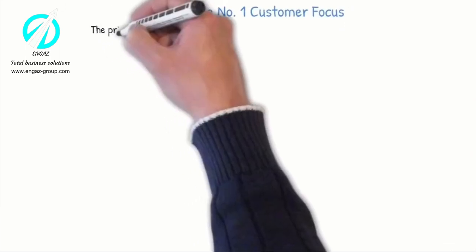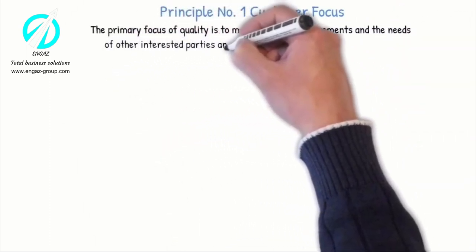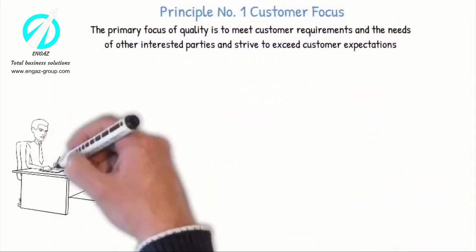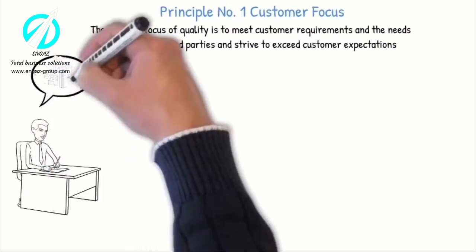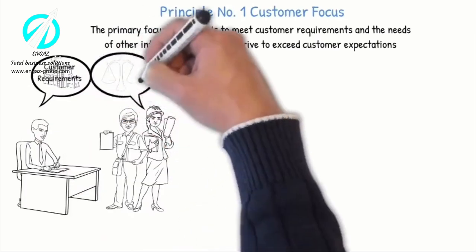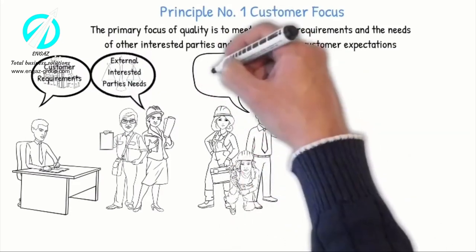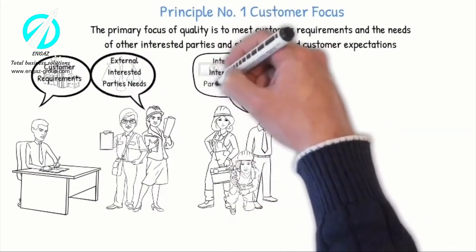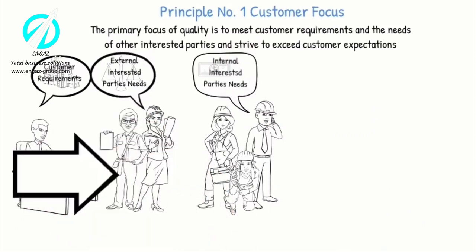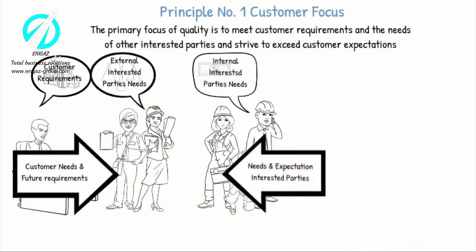Principle number one: Customer Focus. The primary focus of quality is to meet customer requirements and the needs of other interested parties and strive to exceed customer expectations. Sustained success is achieved when an organization attracts and retains the confidence of customers and all relevant external or internal interested parties, such as legislators and employees, that can influence the organization's success. It is very important to understand the customer needs and future requirements and how the needs and expectations of interested parties affect the organization's objectives.